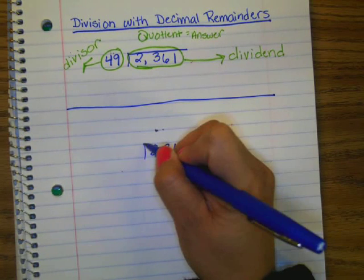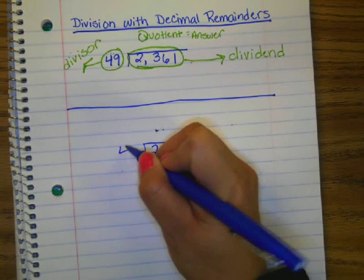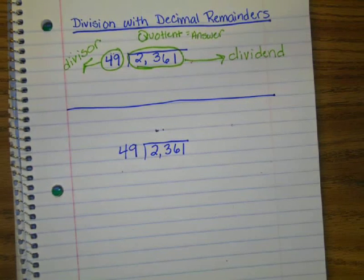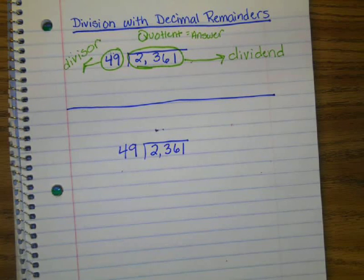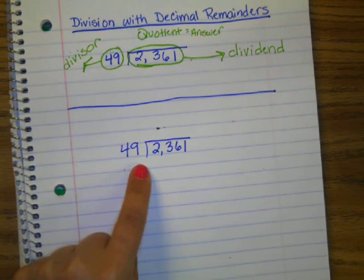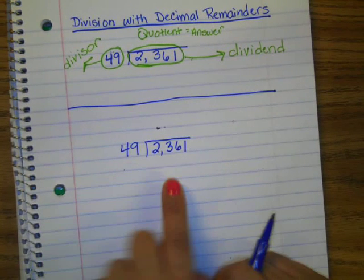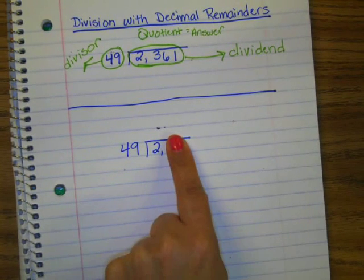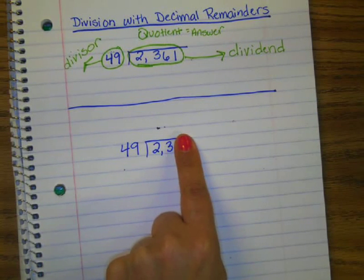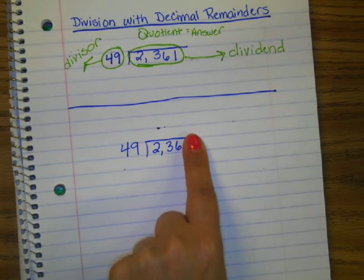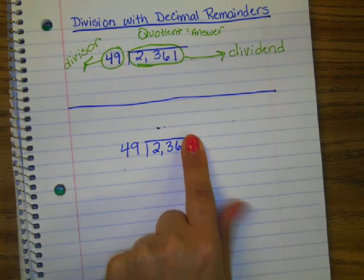So as we're dividing, we're also thinking about place value. We're also reviewing place value today. So we're taking our big number, 49, and first, we're going to look at it. Can 49 go into 2? No. Can it go into 23? No. Can it go into 236? Yeah. Okay, so put a little mark there. That's where you're going to put your first number.